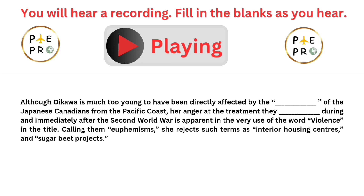Although Oikawa is much too young to have been directly affected by the expulsion of the Japanese Canadians from the Pacific coast, her anger at the treatment they endured during and immediately after the Second World War is apparent in the very use of the word 'violence' in the title. Calling them euphemisms, she rejects such terms as 'interior housing centres' and 'sugar beet projects.'